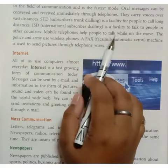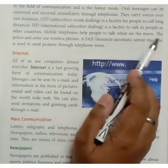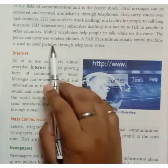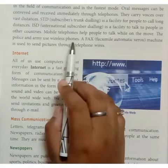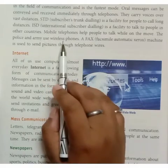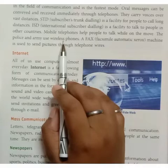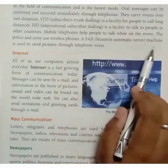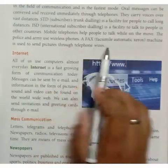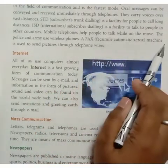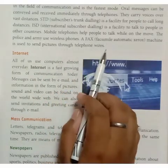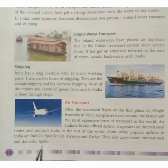Mobile telephones help people communicate while on the move. The police and army use wireless phones. A fax — facsimile automatic xerox machine — is used to send pictures through telephone wires. Hope you have understood this much; we will continue this chapter tomorrow. Thank you.